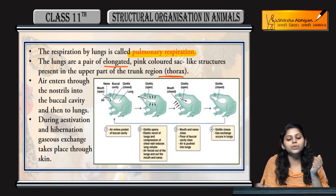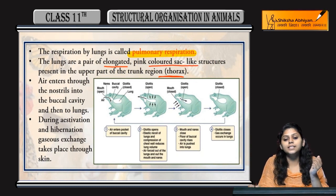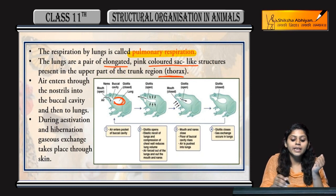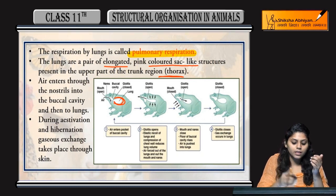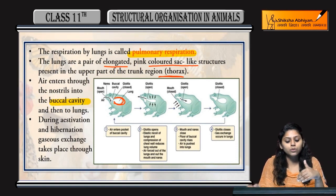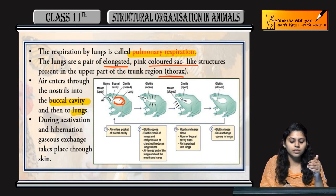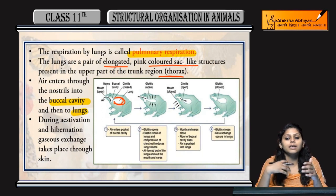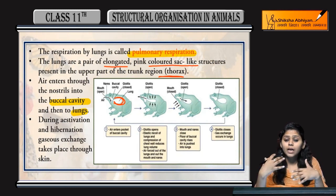The lungs are elongated, pink-colored, sac-like structures. Air enters through the nostrils into the buccal cavity, and then passes to the lungs.